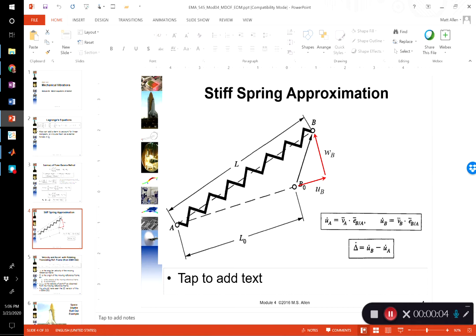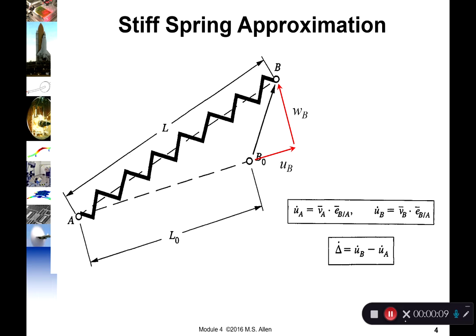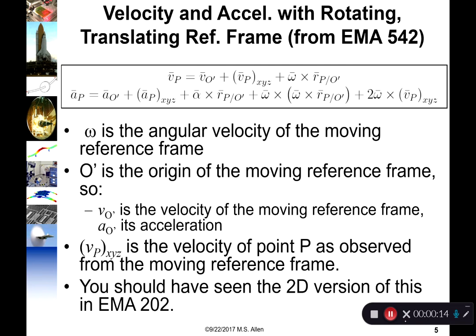This lecture covers a more complicated example of the stiff spring approximation on a fun little system. I just pasted these equations in from EMA 542. This equation lets you calculate the velocity of point P if you know the velocity of point O prime — that's the velocity of point O plus any relative motion. For a rigid body this term would be zero, and then omega cross R gives a position vector from P to O. If these don't look familiar, you should have something in your notes from 202.